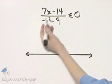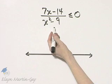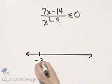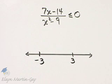Values that make the denominator zero. If you set the denominator equal to zero and solve by factoring, you'll have negative three and three as values that make the denominator zero.